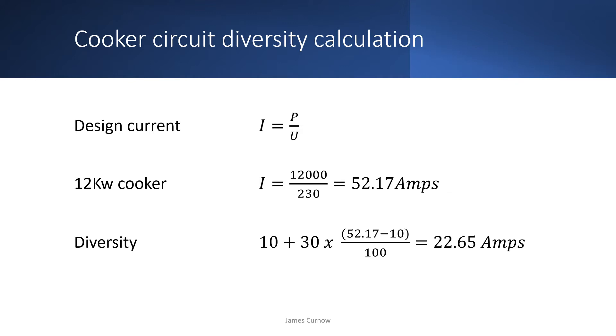The diversity can be applied by using this formula which can be done in one step on a calculator. By having 52.17 minus 10 in brackets, that gives us the remainder. Then by dividing by 100 and multiplying by 30, that gives us 30% of the remainder. By adding 10, which is the first 10 amps, we can then add the 5 amps if there is a socket in the cooker outlet.